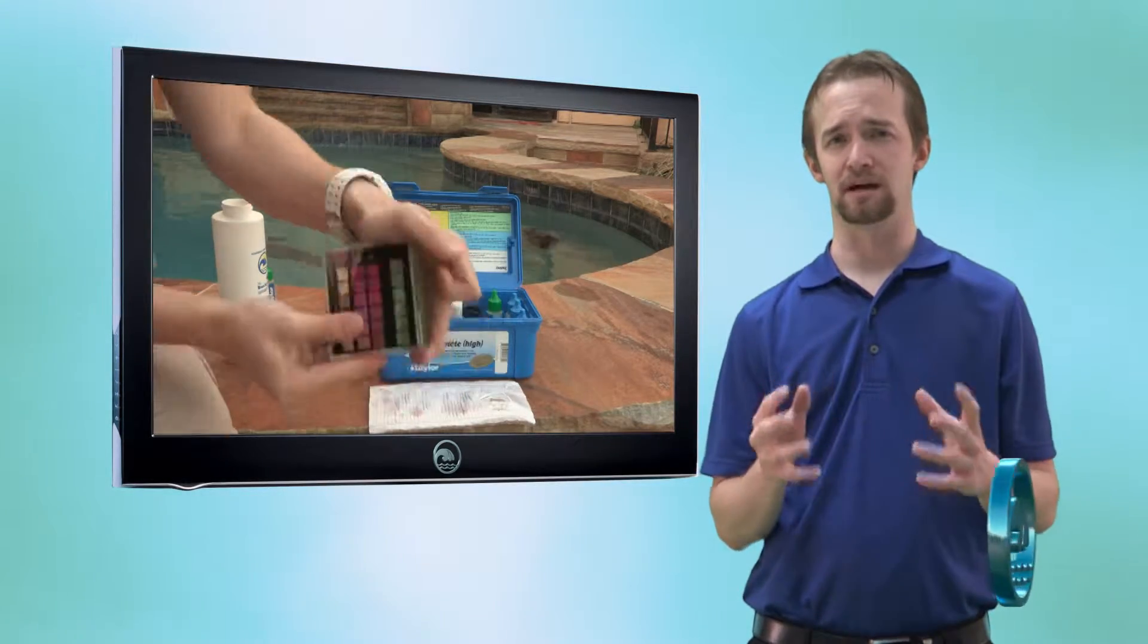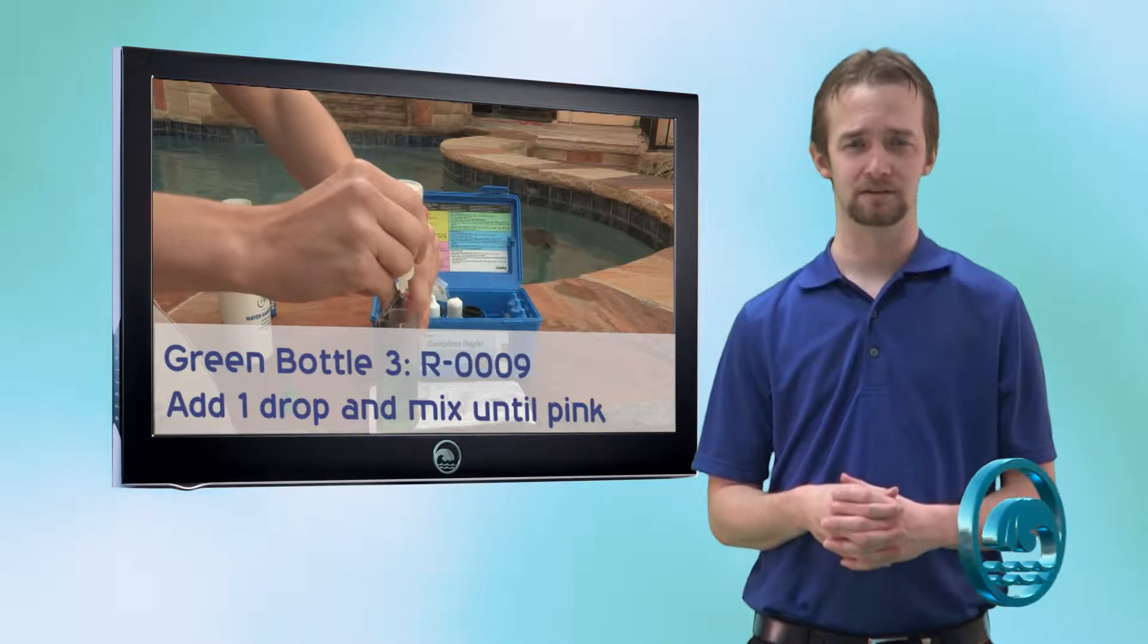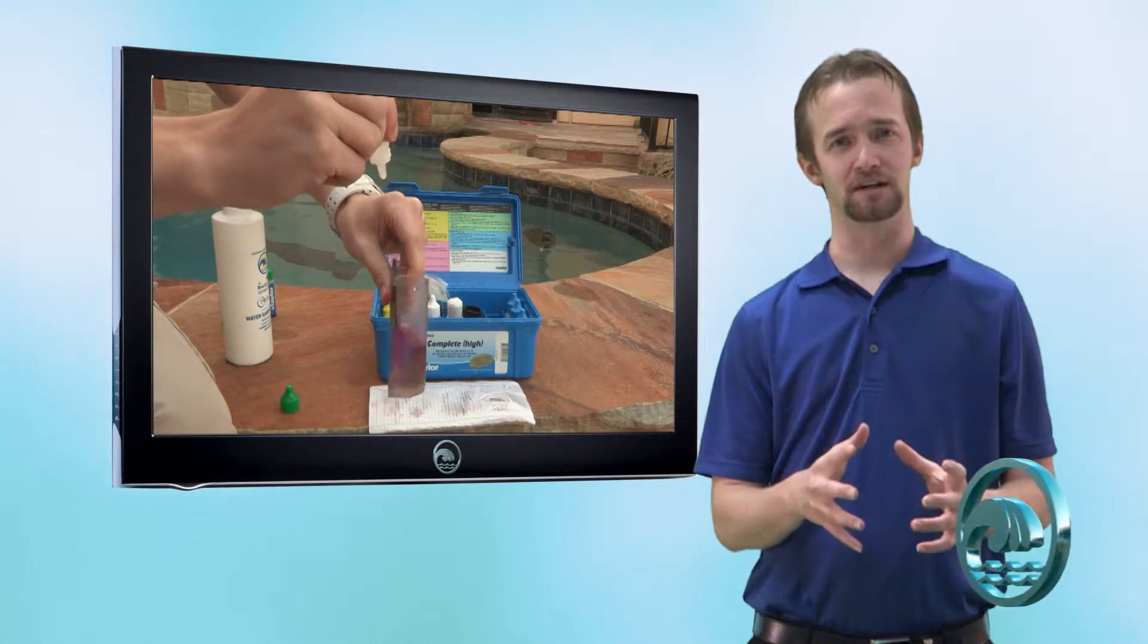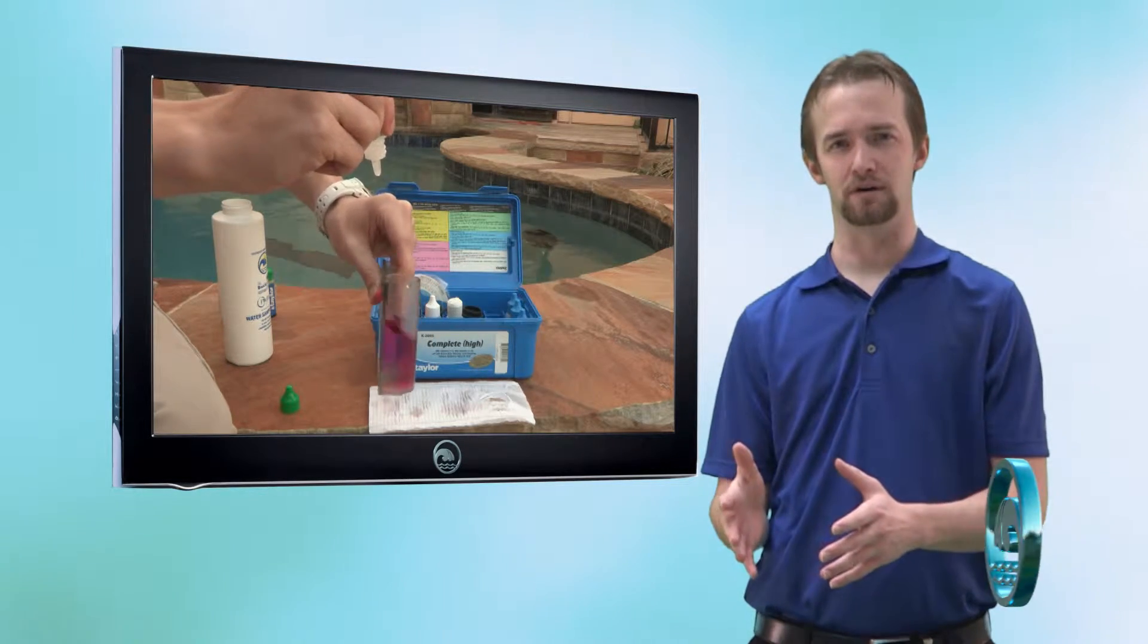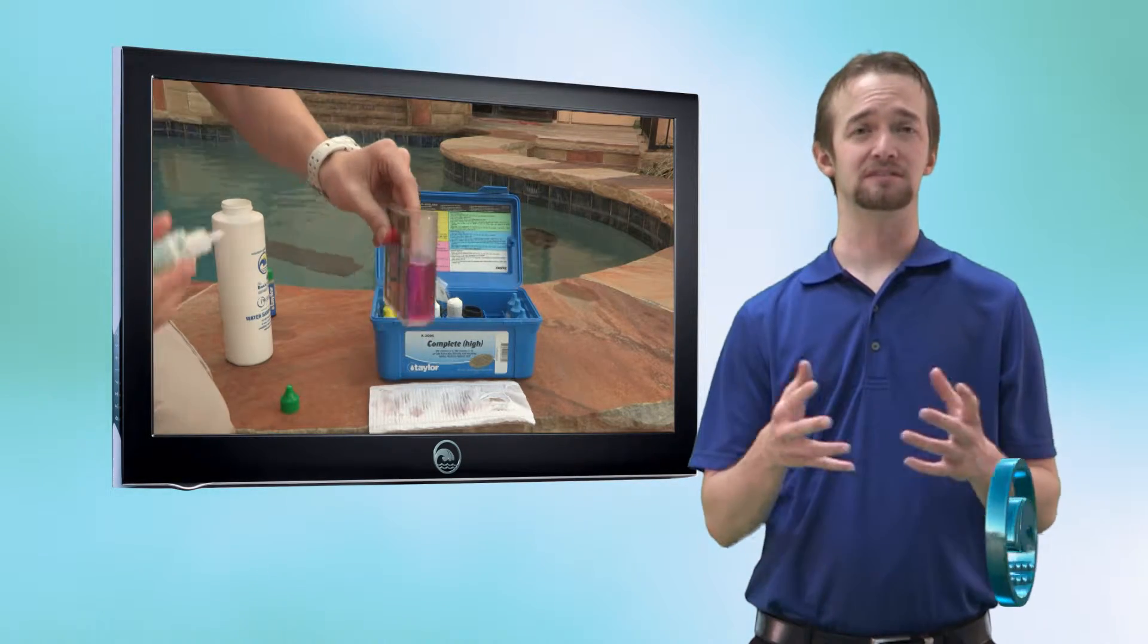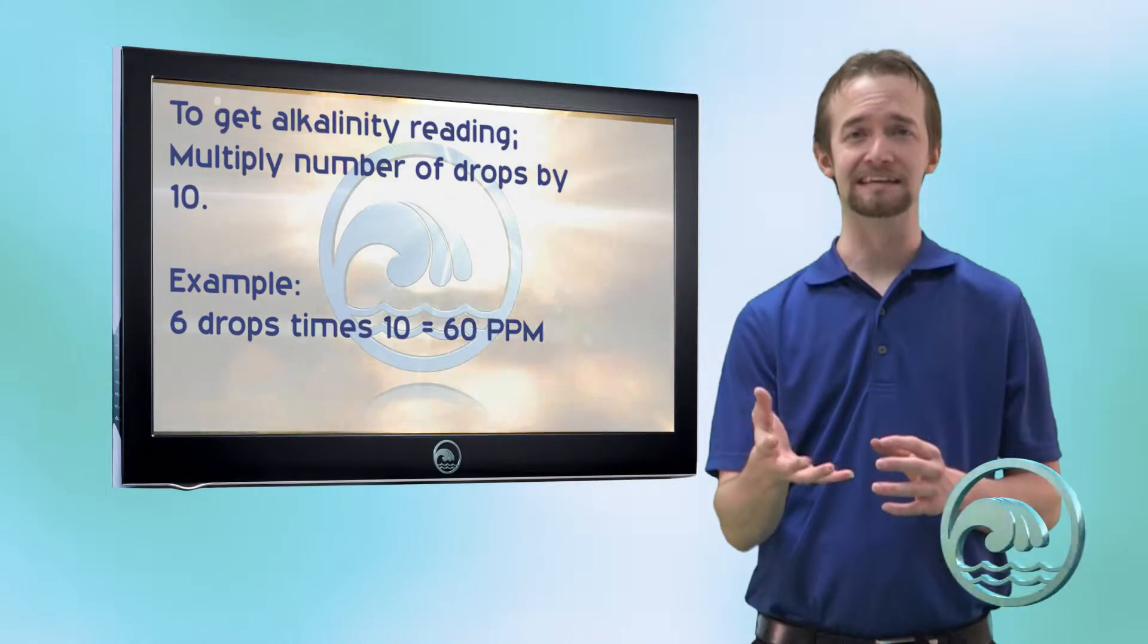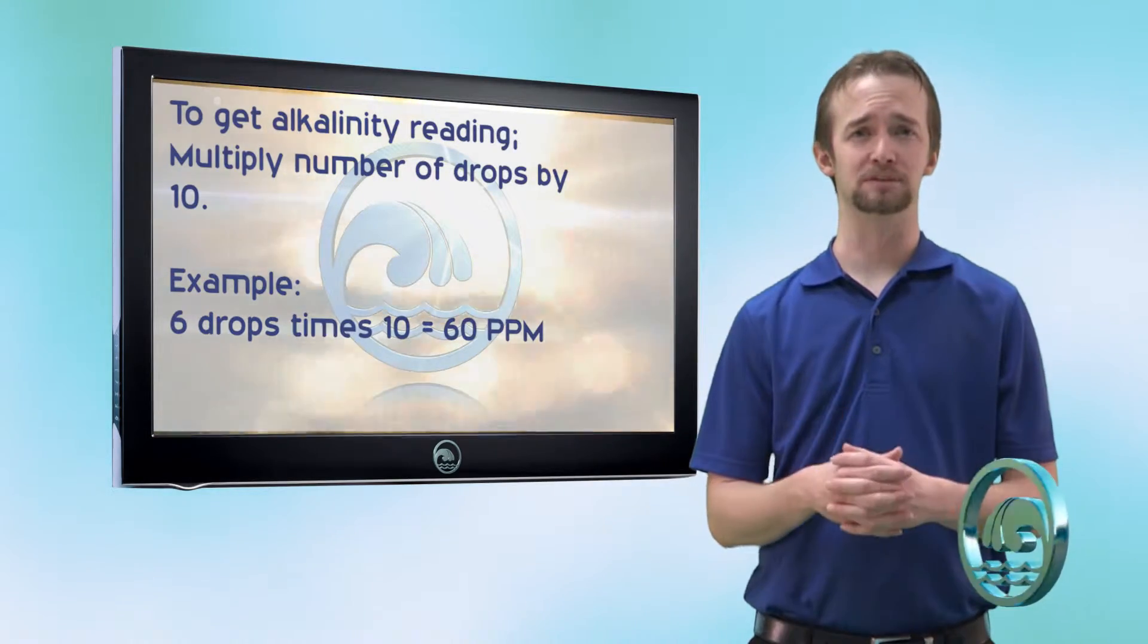Now what I do to get my alkalinity reading is I take the last green bottle, R0009, sulfuric acid, and I'm going to do it slowly, one drop at a time while I'm swirling my sample, and I'm trying to find out how many drops of the R0009 it takes to turn this green water into a solid pink color. So let's pretend it took six drops for me to change that green to pink. I take the number of drops that it took, multiply that by 10, and that's my alkalinity reading. In this case, my alkalinity reading would be 60 parts per million.